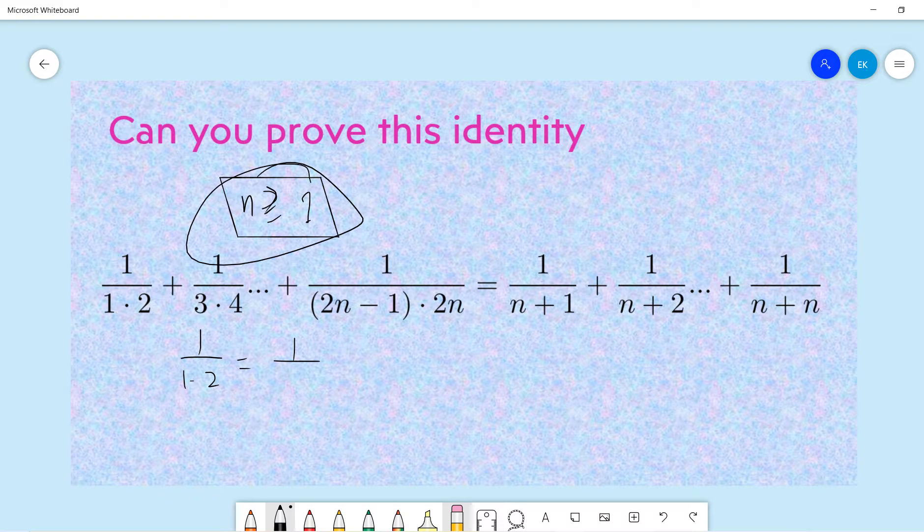So let's see n greater or equal to 1, the left hand side will be 1 times 2, the right hand side will be 2, right? 1 divided by 2. So they are the same.